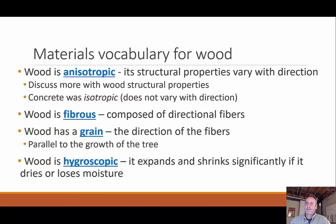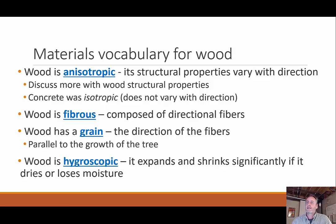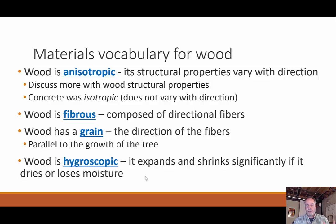Some key vocabulary for material properties of wood. Wood is anisotropic, meaning its structural properties are dependent on the direction of the wood fibers. Concrete was isotropic — direction doesn't matter — but with wood, direction is very important. Wood is also fibrous, with directional fibers that grow up the length of the tree, giving it a grain. And wood is hygroscopic: as moisture increases it swells, and as moisture decreases it shrinks.